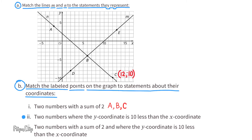For the second statement, we need to find two numbers where the y-coordinate is 10 less than the x-coordinate. Look at point B — the coordinates are 6 and negative 4. Negative 4, the y-coordinate, is 10 less than 6, the x-coordinate. Now look at point D. Point D's coordinates are 2 and negative 8. Negative 8, the y-coordinate, is 10 less than 2, the x-coordinate.